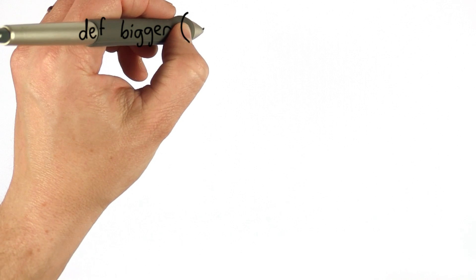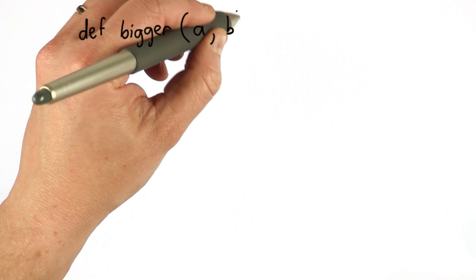It takes two inputs. We can give them any name we want. Since there's no real meaning to the inputs, we'll just use A and B.